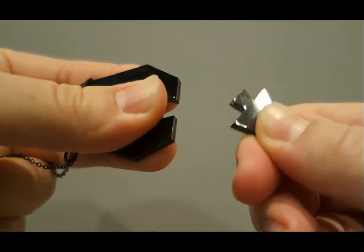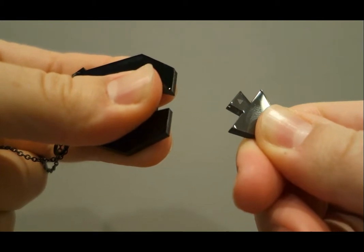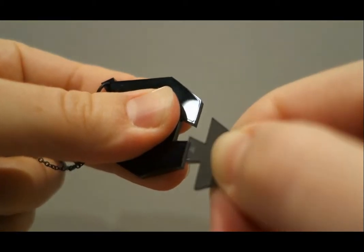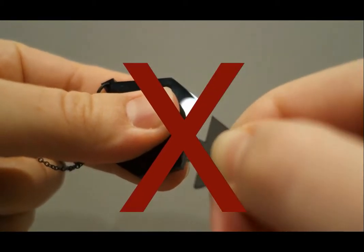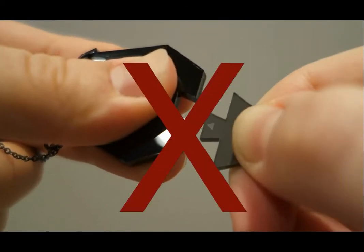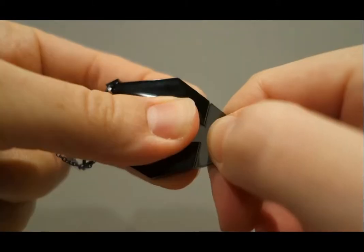There are two things you want to make sure not to do. Don't twist off the bottom piece, and don't yank it off in one motion. Remember, just gently wiggle.